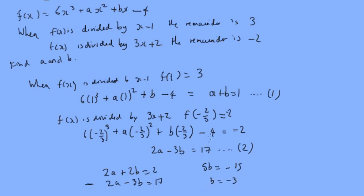Substituting back into equation 1, a minus 3 equals 1, so a must be equal to 4. And then we can put that back into our original equation f of x. So I hope that helps.